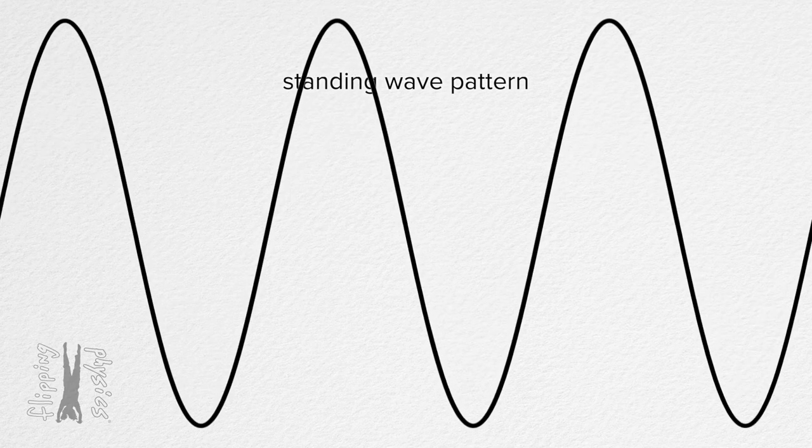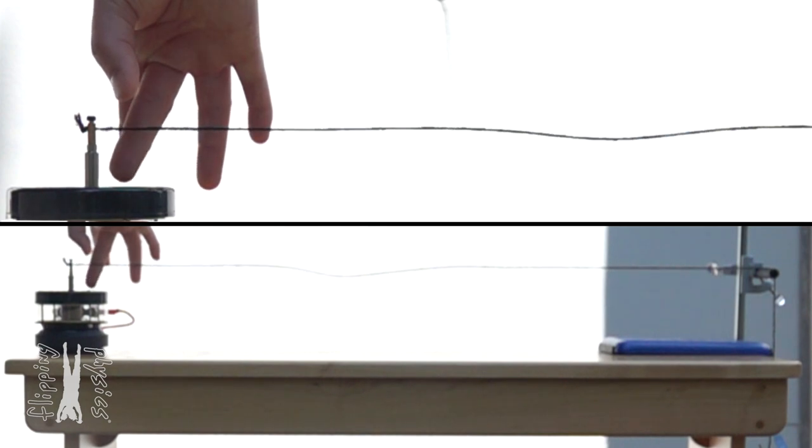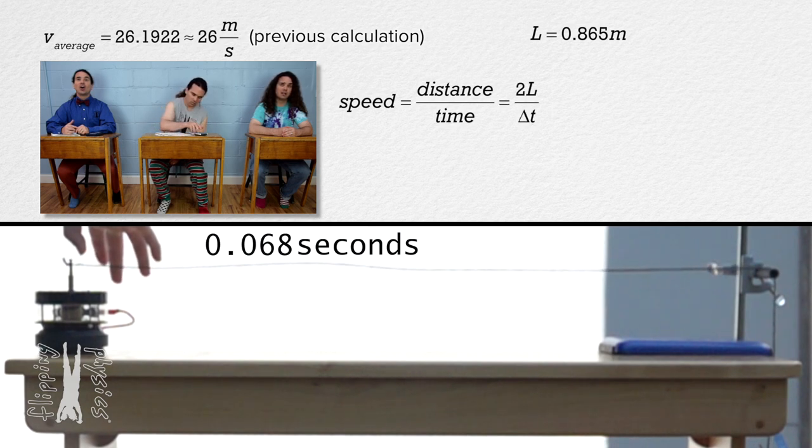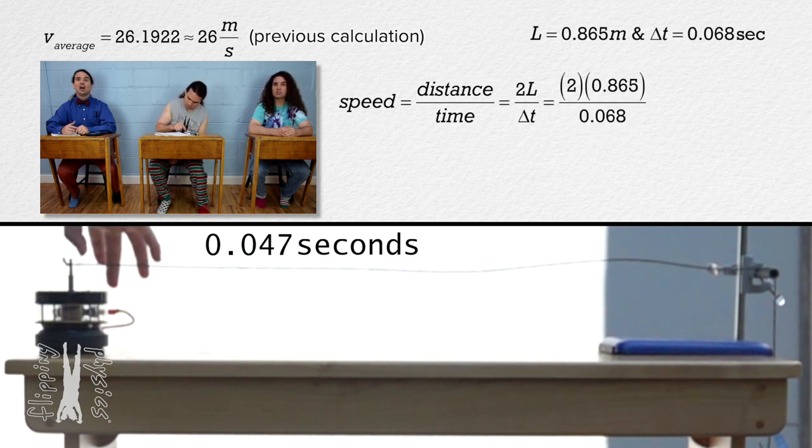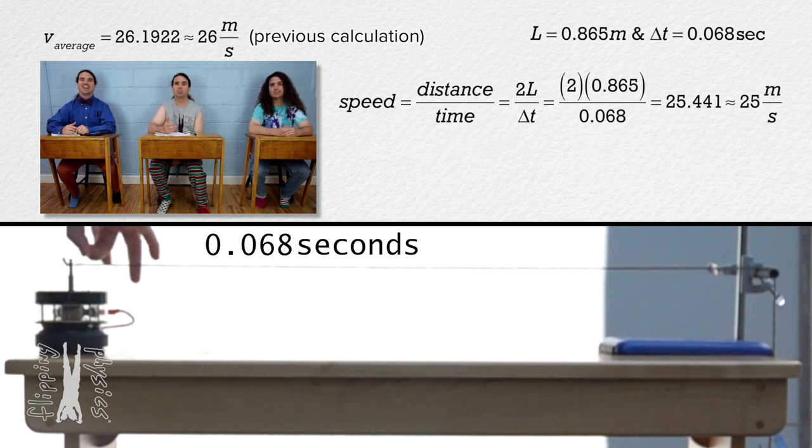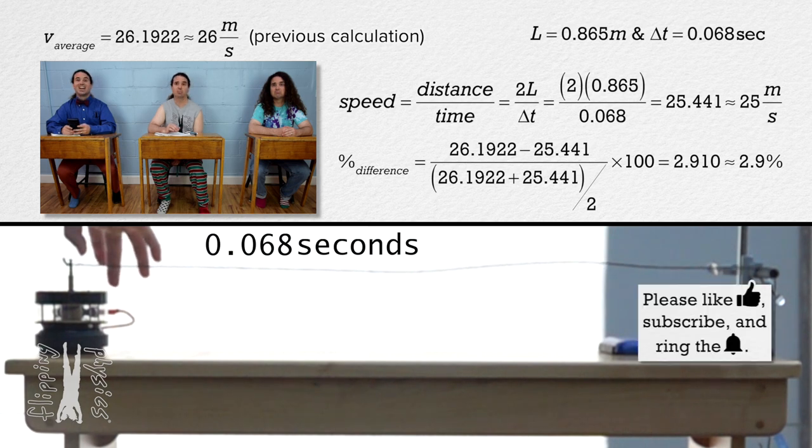However, if we go back to the single wave pulse I created by plucking the string, realize we can measure the speed of the wave pulse. And it should be the same as the speed we determined using the speed equals frequency times wavelength equation. Right. All we need is the time it takes for the wave pulse to go there and back again. Here it is. Speed equals distance over time. The distance is 2 times L. The change in time is 0.068 seconds. So the speed is 25.441 or 25 meters per second with two significant digits. And the percentage difference between our two ways of calculating the speed of the wave on the string is 2.910 or 2.9%. Nice.